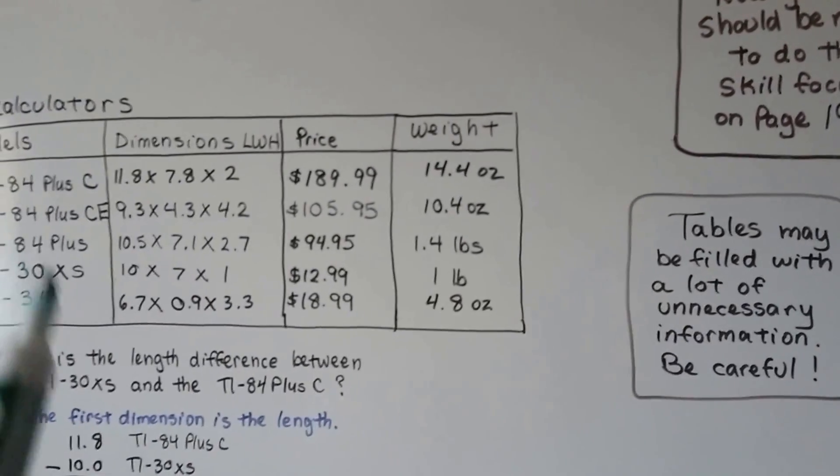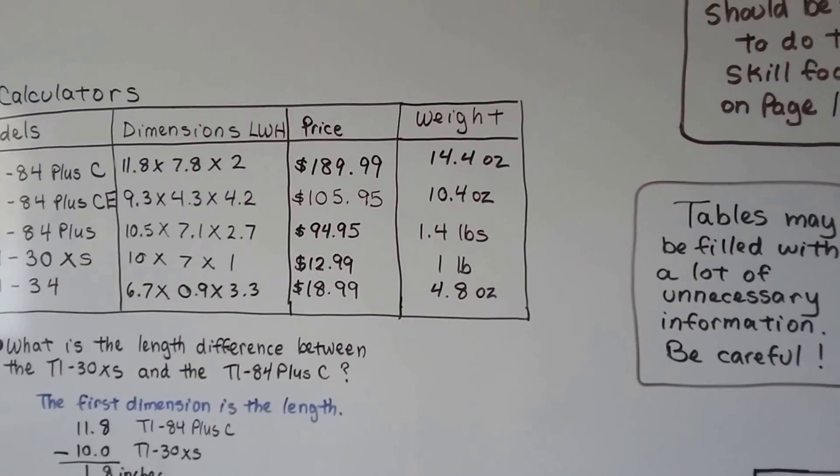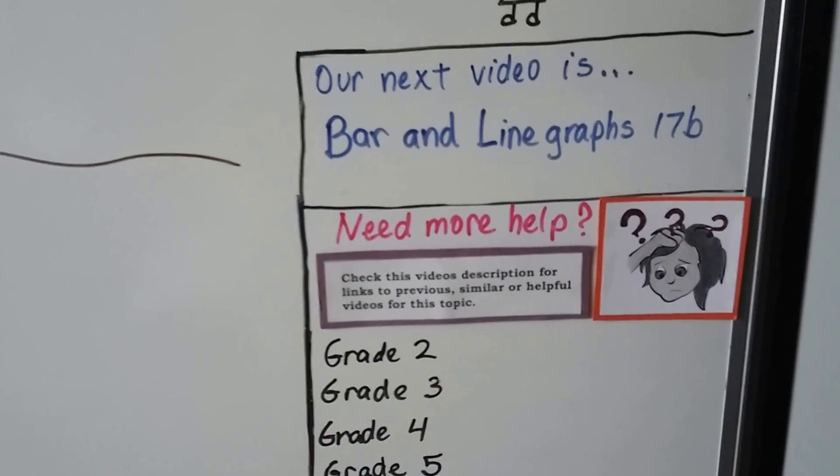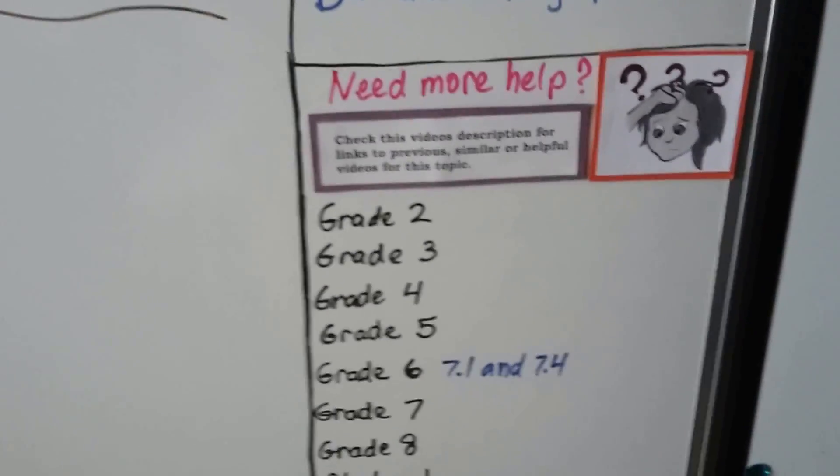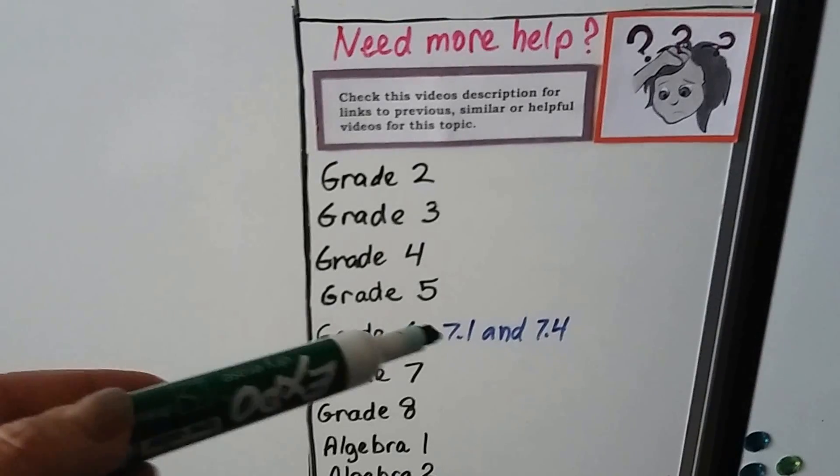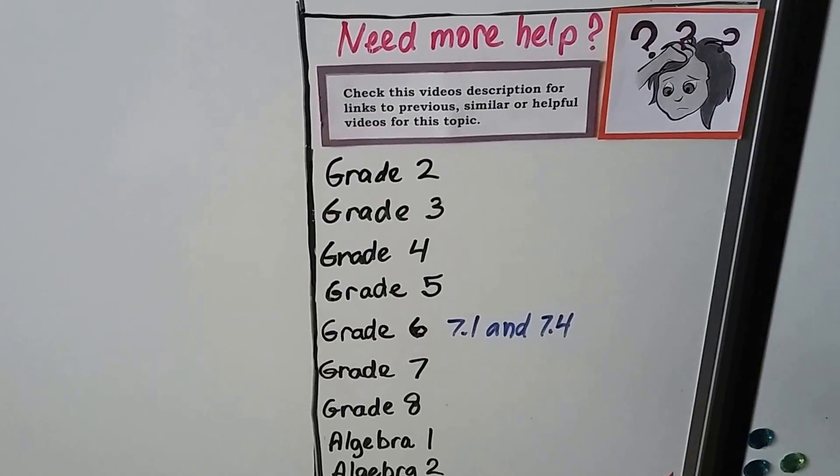Be very, very careful how you read the tables and the charts. We're going to talk about bar and line graphs next. That's lesson 17b. And there's a couple of great videos in my grade 6 playlists, 7.1 and 7.4.